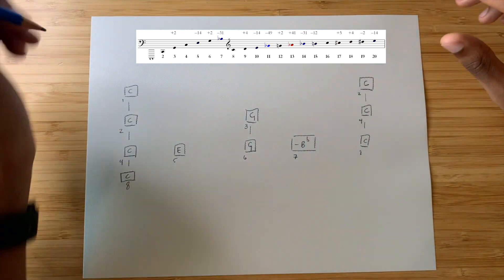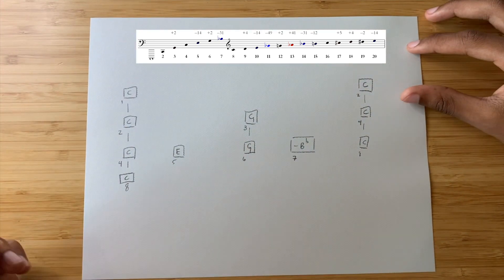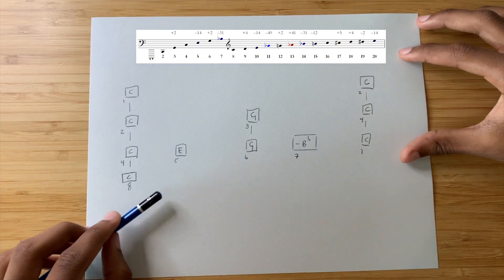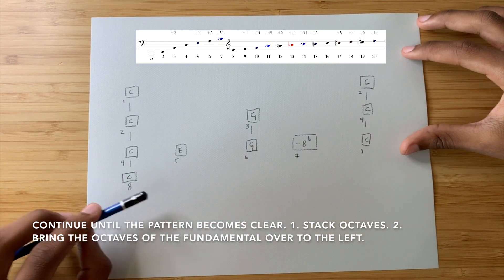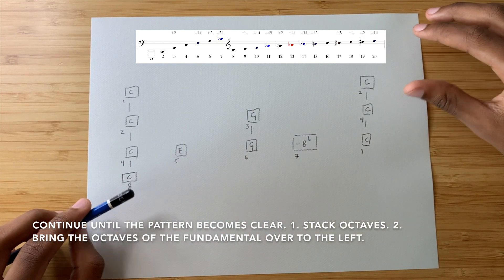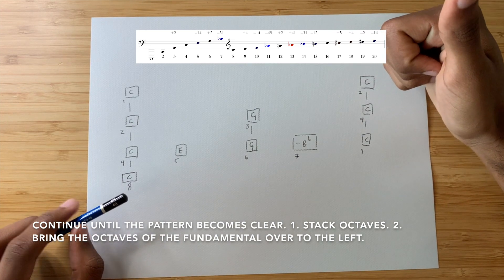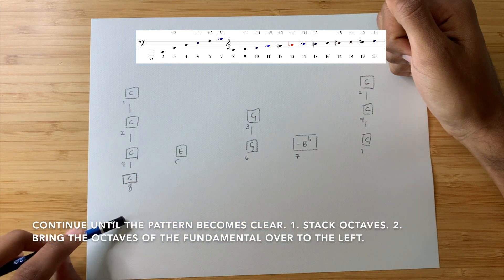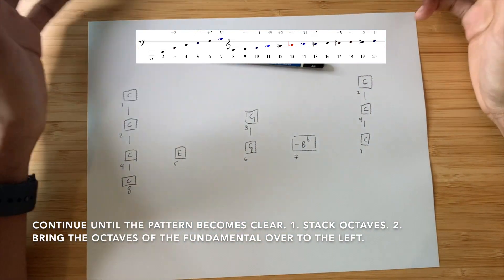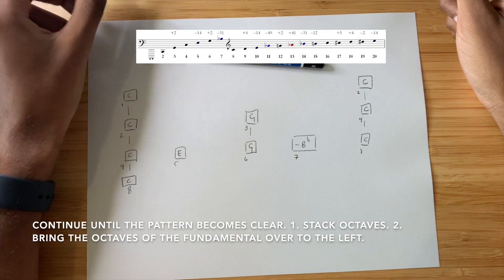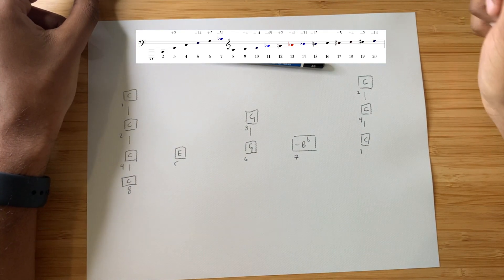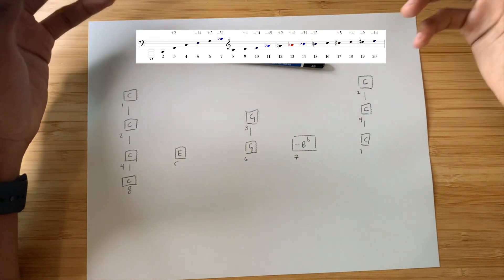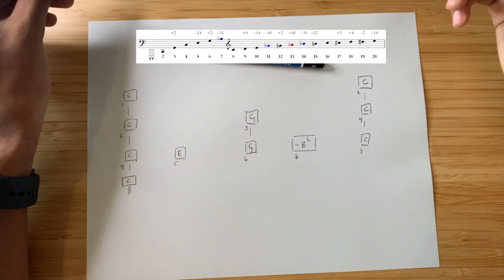And what I want you to do now is just continue this pattern. So, the next overtone is nine. So, figure out where on the graph are you going to put overtone nine. And remember, you want to stack all of the octaves, and you want to bring the octave of the fundamental over to the left-hand side of the page. And so, I want you to go ahead and do that all the way until overtone 32. And you'll see that this pattern, and it'll become very, very clear to you.